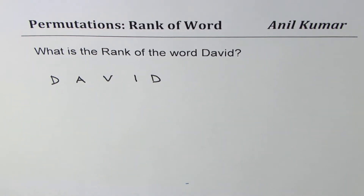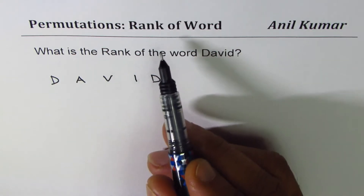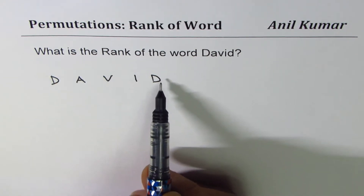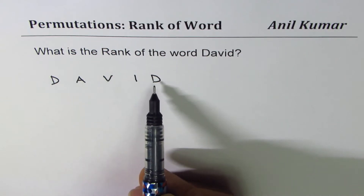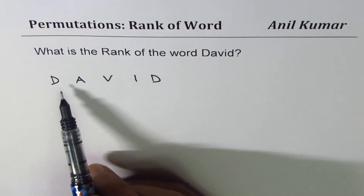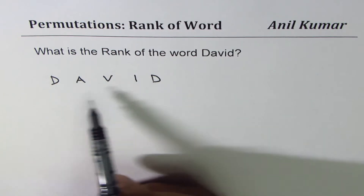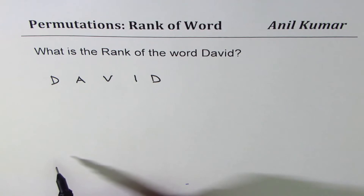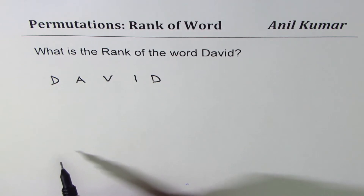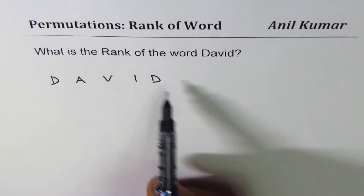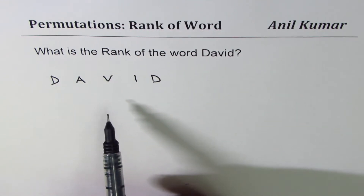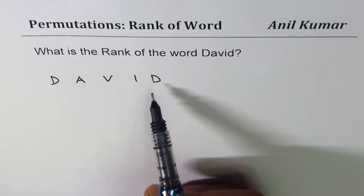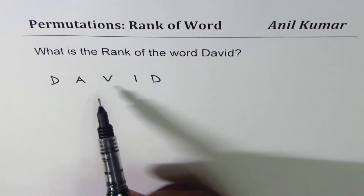Let's see how to figure out the rank of the word when there is some repetition. Rank, as you understand, is: once we form all the words using these letters together, where will DAVID appear when arranged in alphabetical order, as you do it in a dictionary? That's the whole idea. Since we ultimately arrange all of them in alphabetical order, it's a good idea to write them in alphabetical order to begin with.